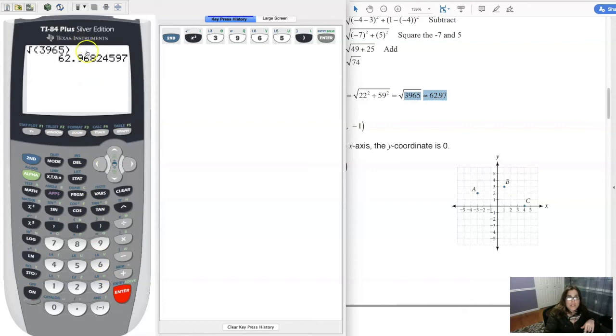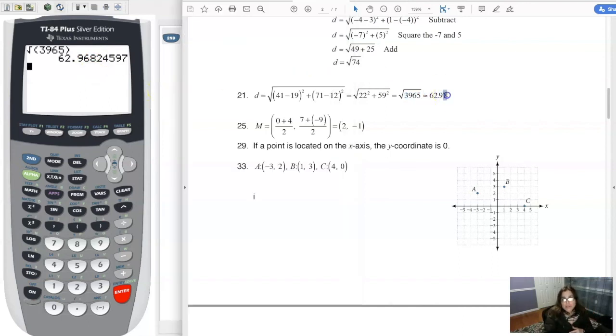But the directions here said round to the nearest hundredths place. So that's the second digit after the decimal or the second digit to the right of the decimal, which is a six. But if I look immediately to the right of that, I see an eight. That's why I'm rounding up. So that's why you see over here, it's 62.97 because I rounded up.